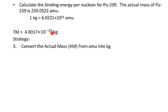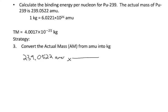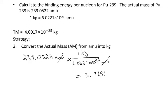Here's our theoretical mass from the previous slide. What we're going to do next is convert the actual mass from atomic mass units to kilograms using the conversion factor we were given. I'll take my actual mass and put 6.0221 × 10²⁶ AMUs in the denominator and one kilogram on top so the AMUs cancel. When I divide that out, I get an actual mass of 3.9696 × 10⁻²⁵ kilograms.